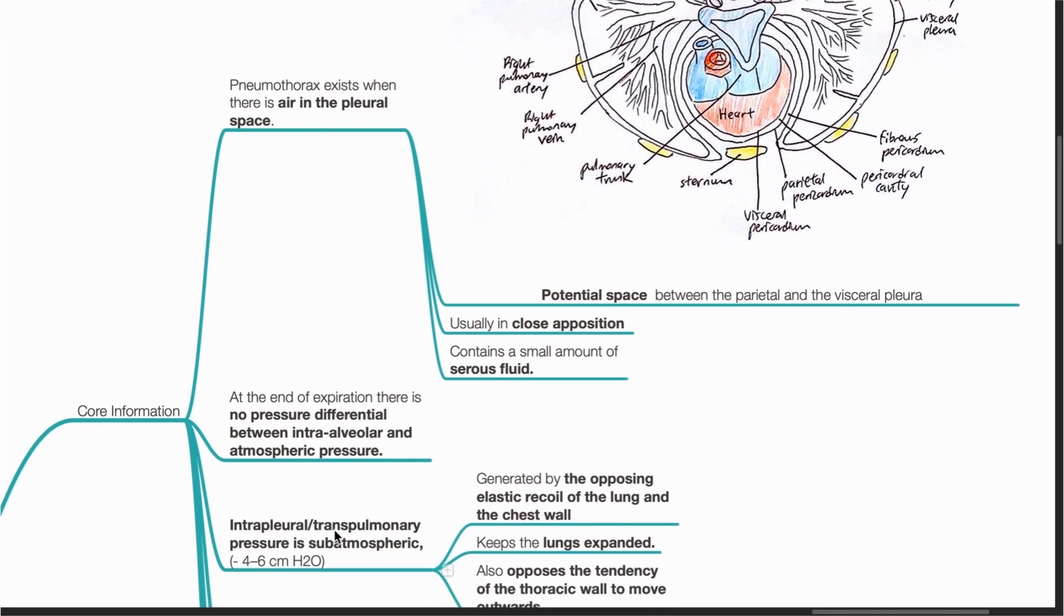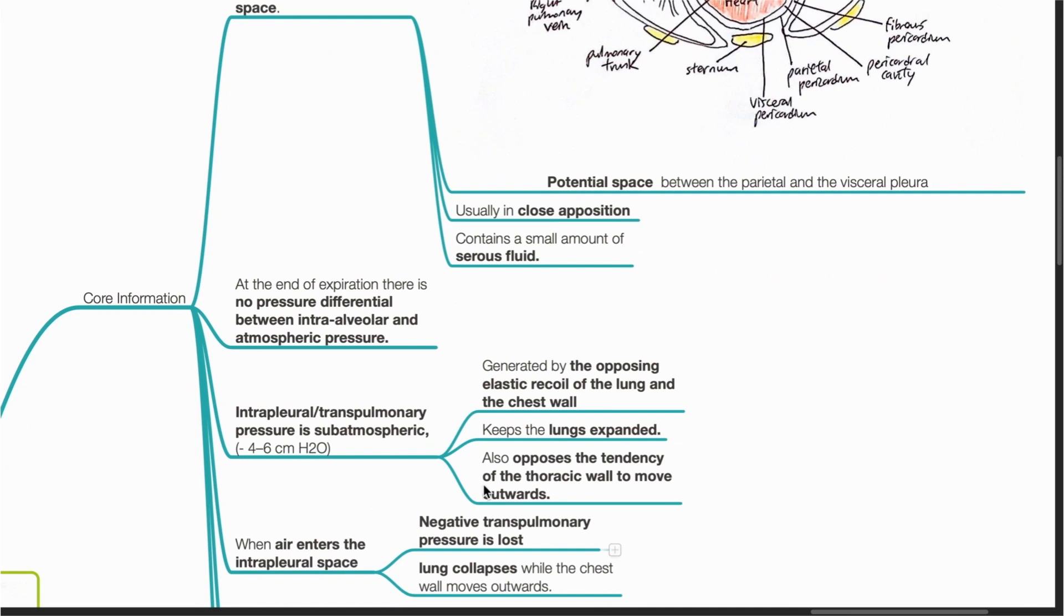Intrapleural or transpulmonary pressure is subatmospheric at negative 4 to 6 cmH2O. It is generated by the opposing elastic recoil of the lung and the chest wall. It keeps the lungs expanded and also opposes the tendency of the thoracic wall to move outwards.